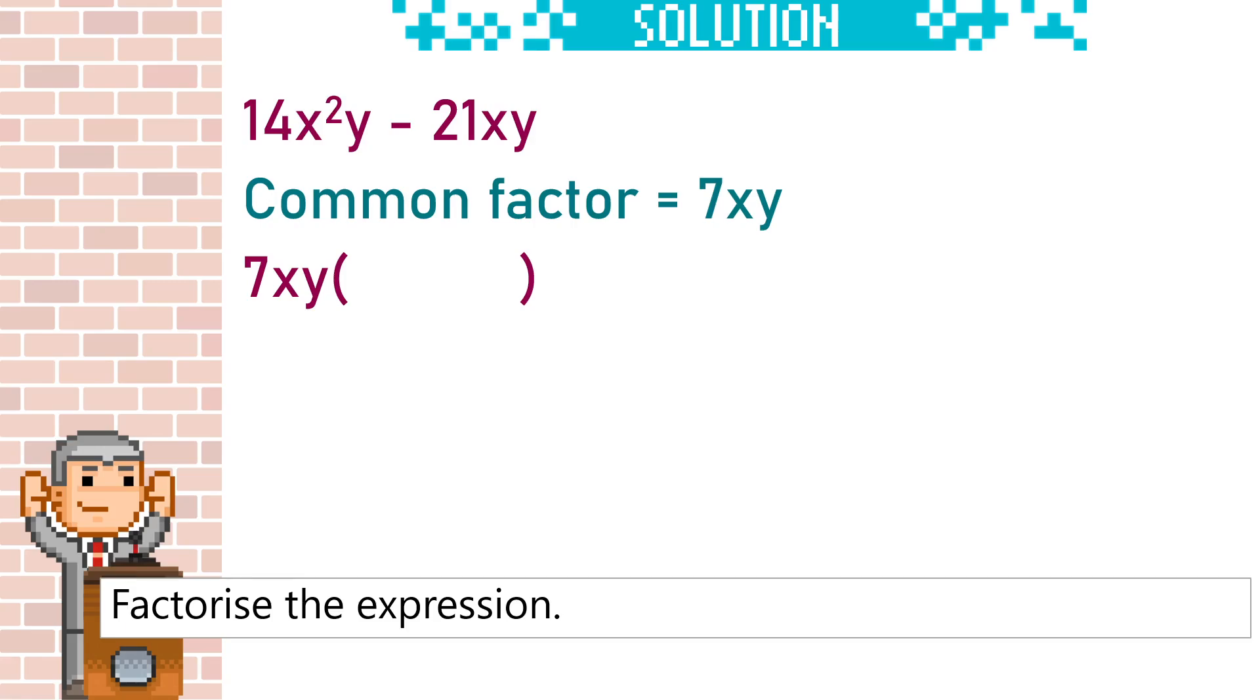So that will remove one of those x's and it will remove the y and it will just leave x. So our first term in the bracket will be 2x.